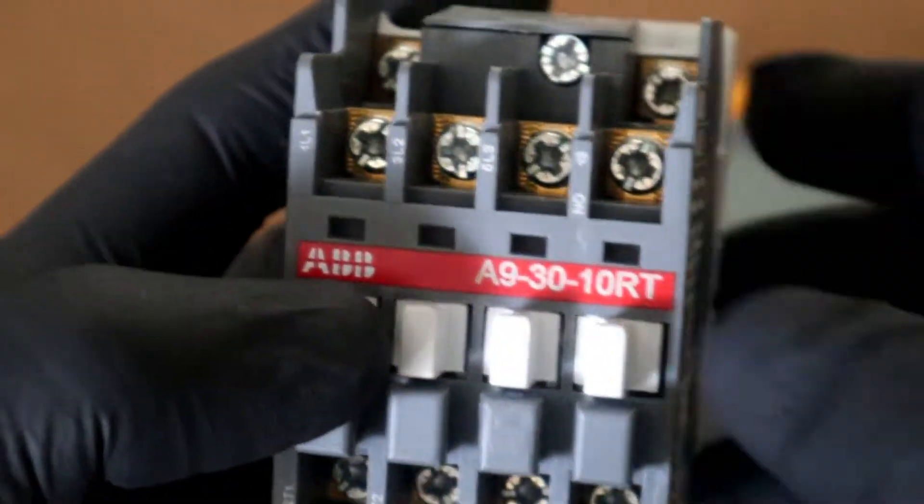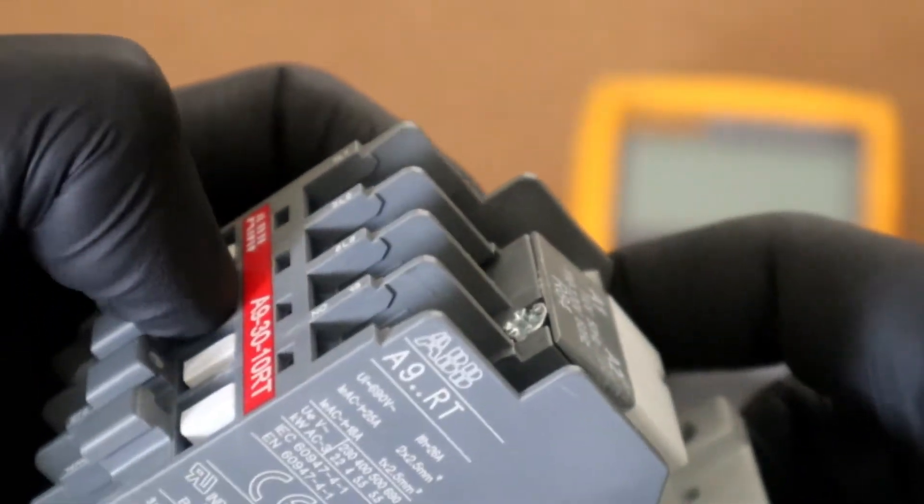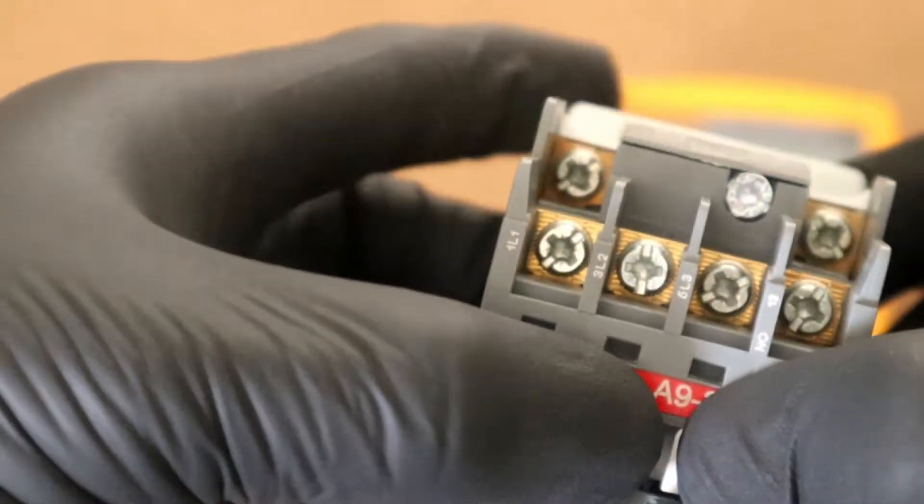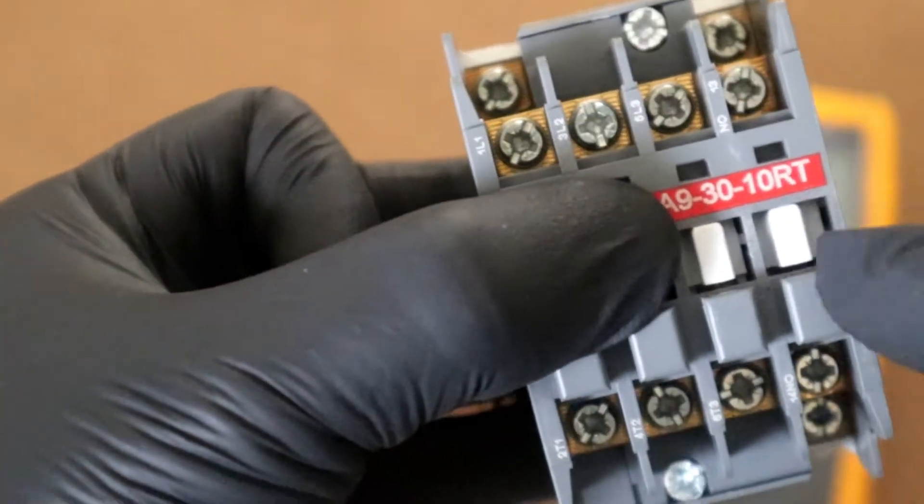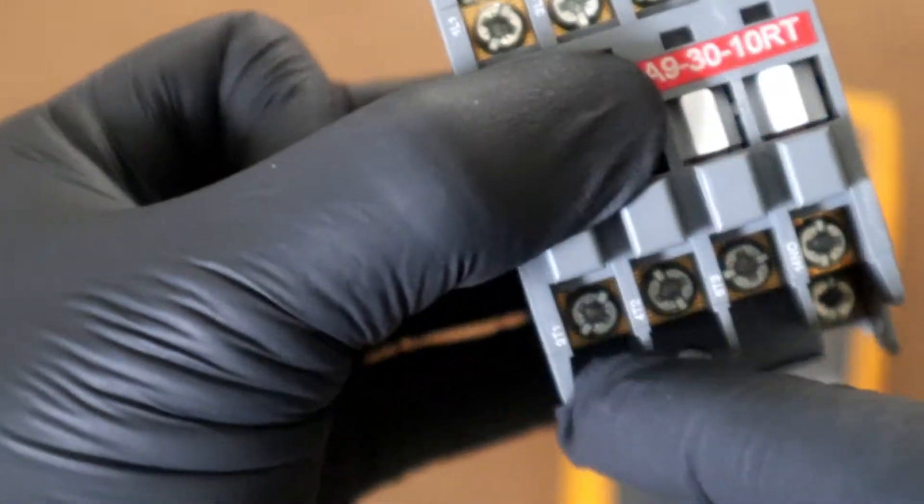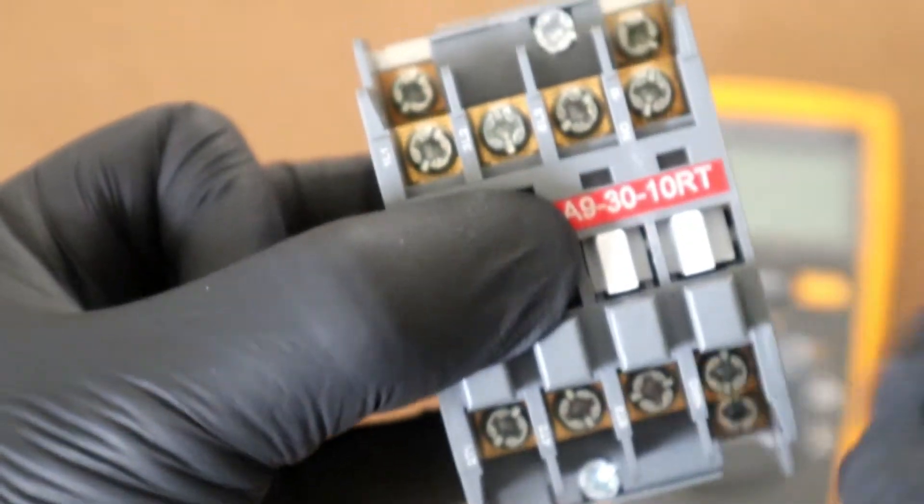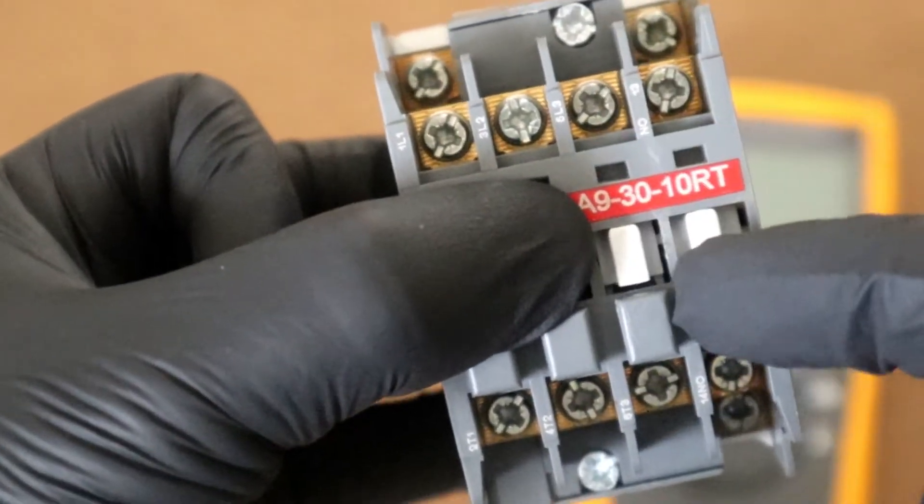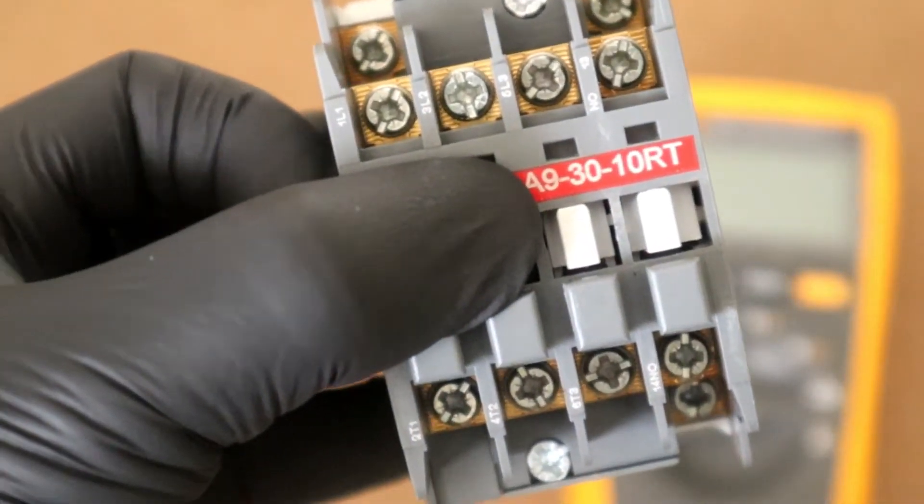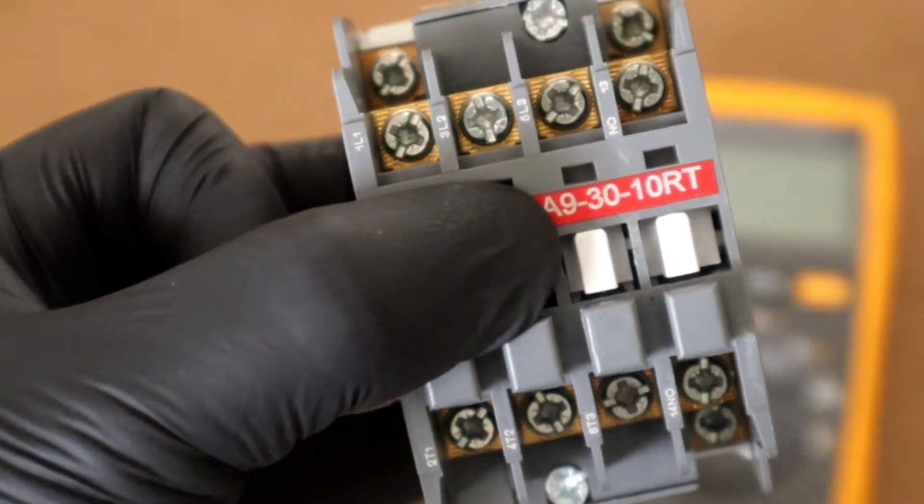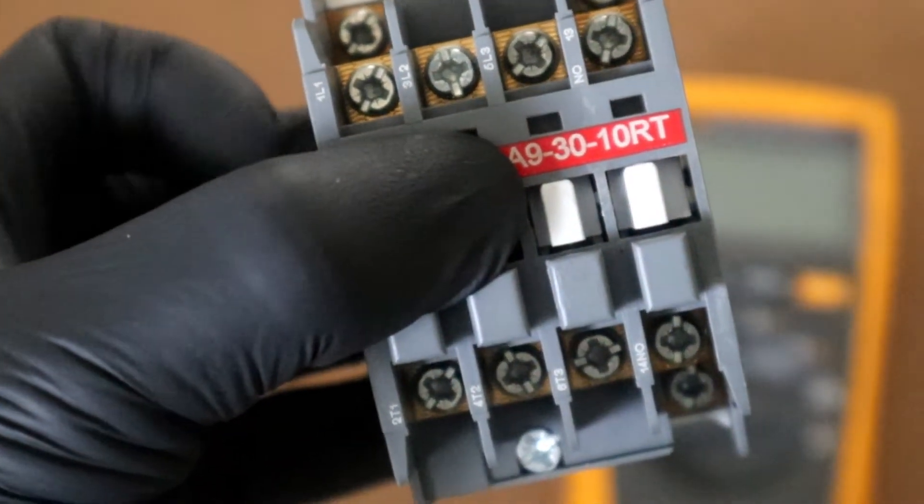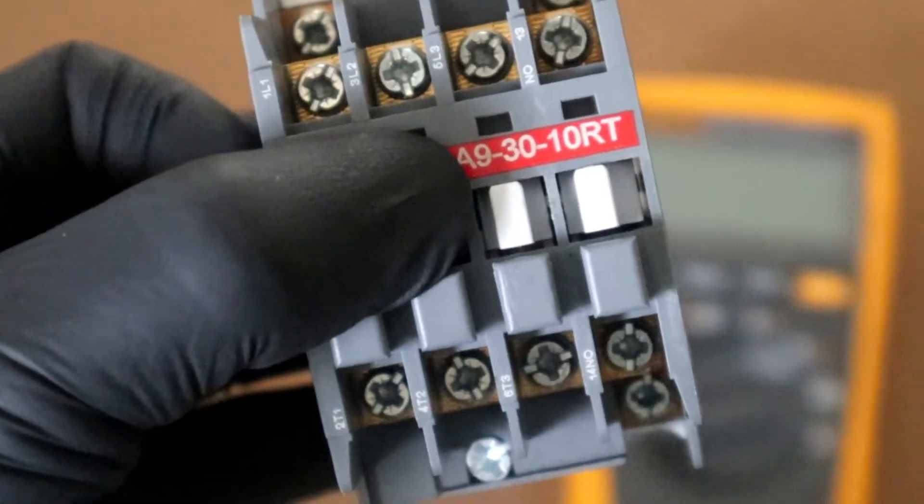On the contrary if we should press here with our fingers, simulating a closed contact, and go across L1 to T1, L2 to T2, L3 to T3 or across our normally open contact we should have a very low resistance reading, normally around 0.2 to 0.4 ohms.